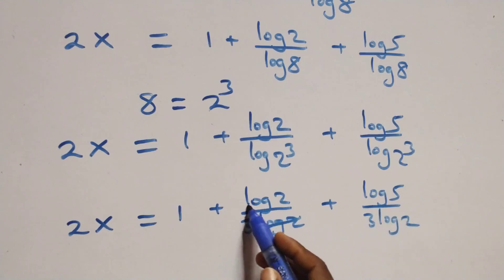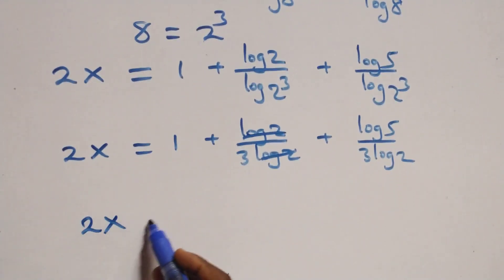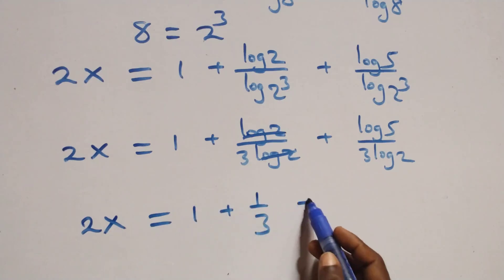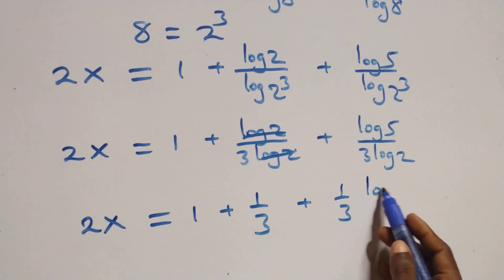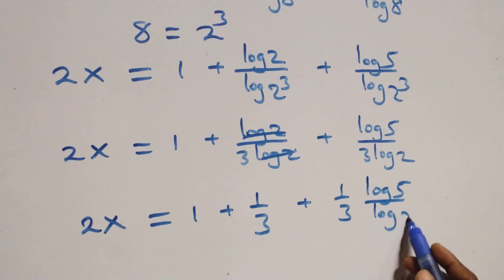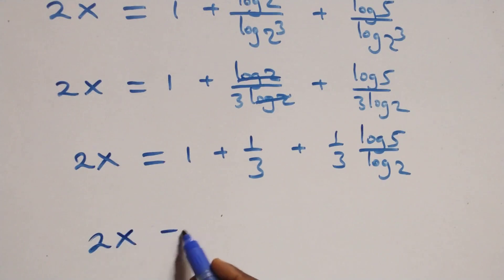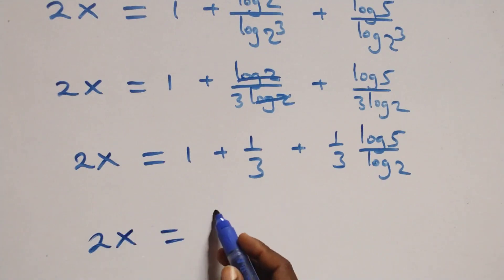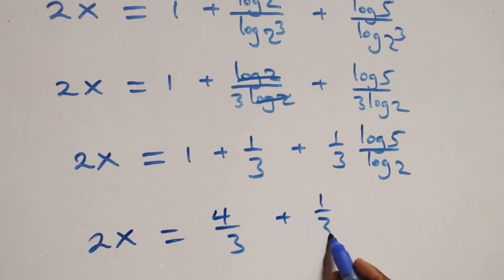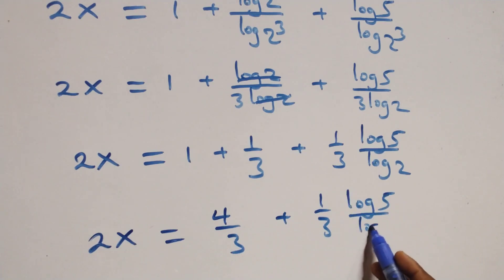The log 2 terms cancel each other. We have 2x equals to 1 plus 1 over 3 plus 1 over 3 times (log 5 over log 2). Writing this together: 2x equals to 1 plus 1 over 3 plus 1 over 3 times (log 5 over log 2).